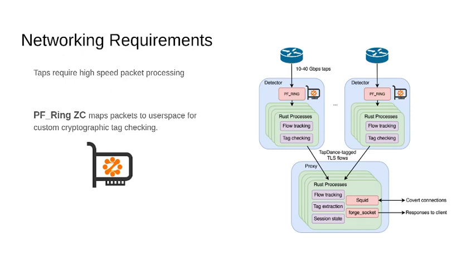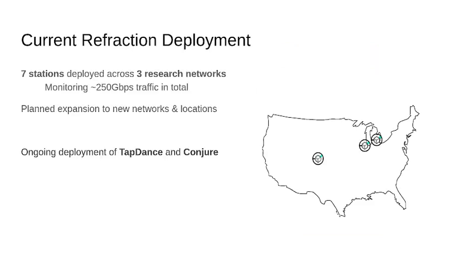So the way we handle that is by leveraging PF_RING zero-copy, which we place at the ingest layer to map packets from the network card into user space so we can do flow tracking and tag checking as efficiently as possible. In our current deployment, PF_RING zero-copy helps us handle all of that traffic with a minimal drop rate. Our current deployment is seven stations across three independent research networks, monitoring around 250 gigabits per second in total.